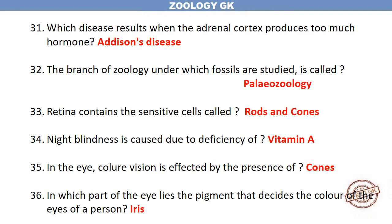The retina contains sensitive cells called rods and cones. Night blindness is caused due to deficiency of Vitamin A. In the eye, colour vision is affected by the presence of cones.